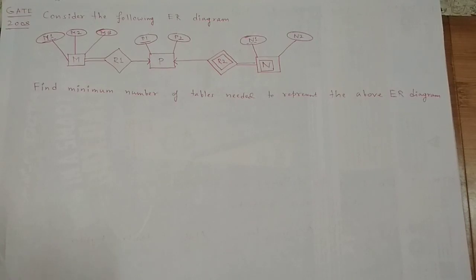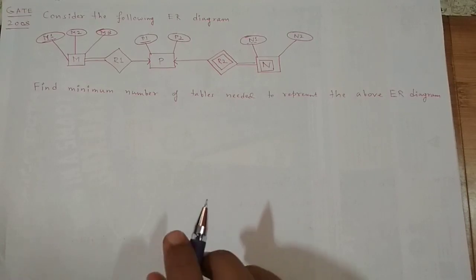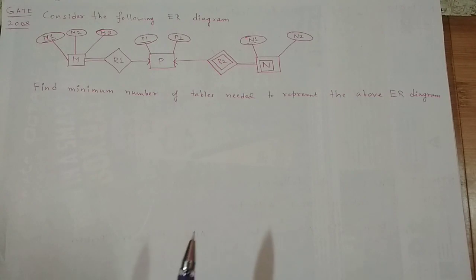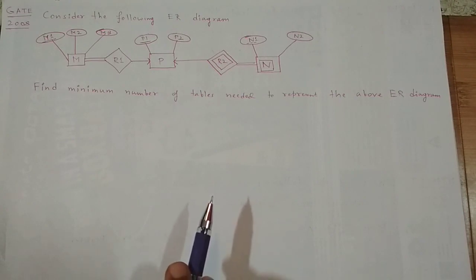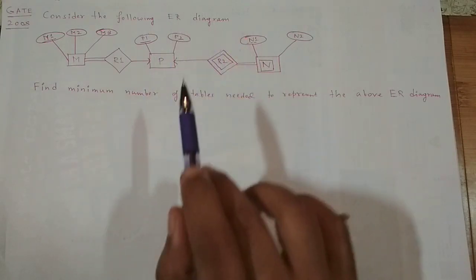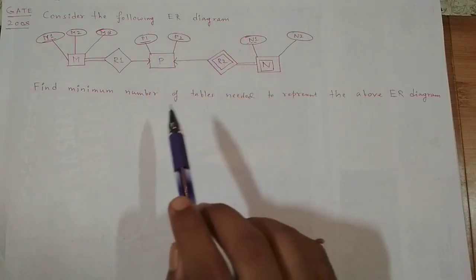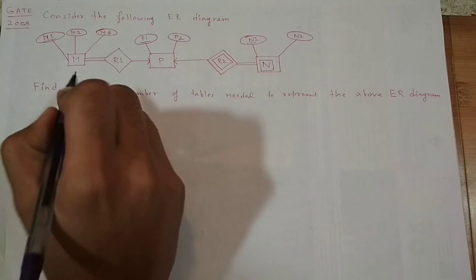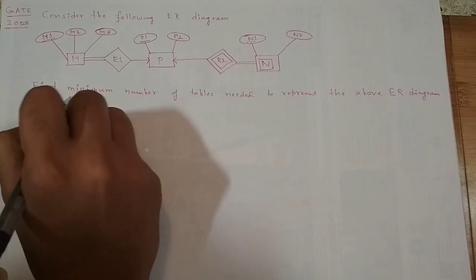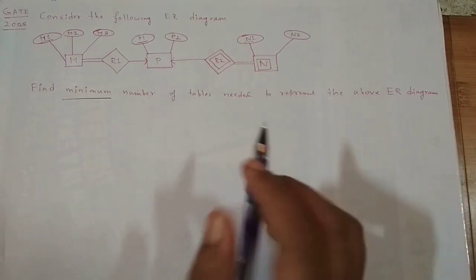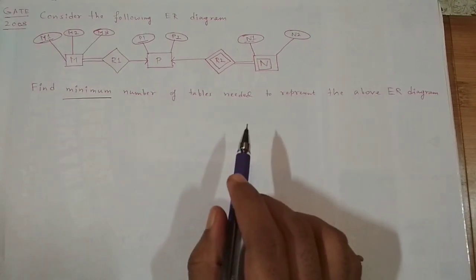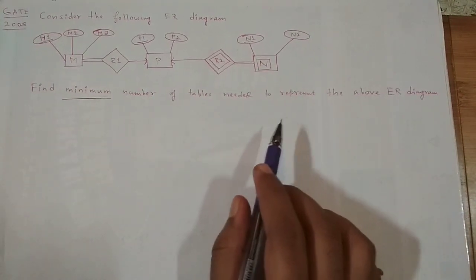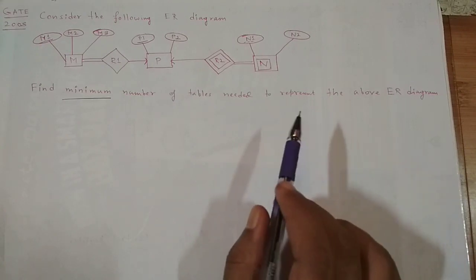Let's solve this question. This has been asked in GATE 2008. We have been given an ER diagram — an entity relationship diagram — and we have been asked to find the minimum number of tables needed to represent the above ER diagram.